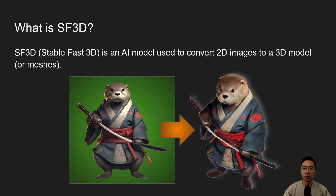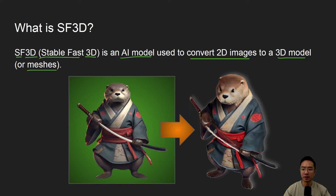So what is SF3D? SF3D — the SF stands for Stable Fast, and 3D is just for the 3D model. It's an AI model that is used to convert 2D images to 3D models. A 3D model you can also think of as meshes, which are described by a bunch of triangles.